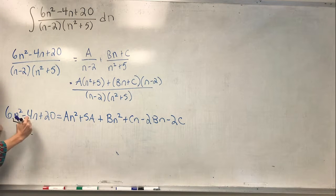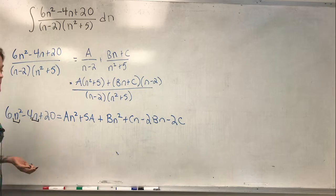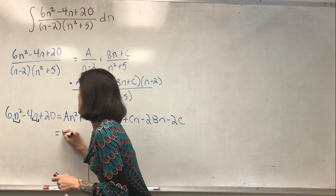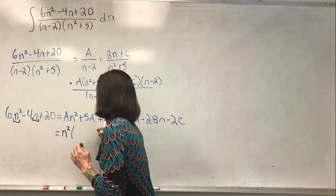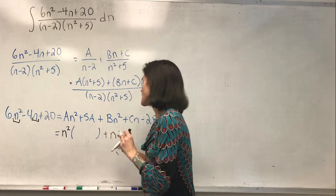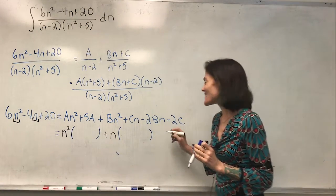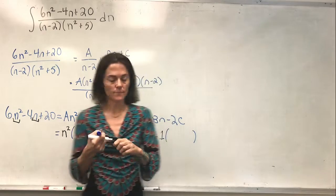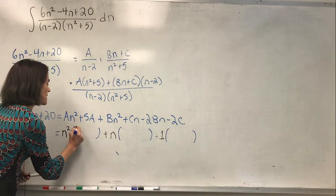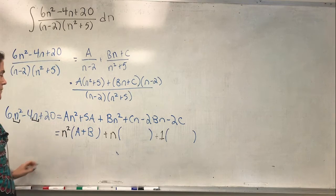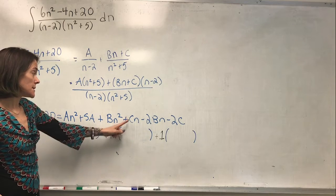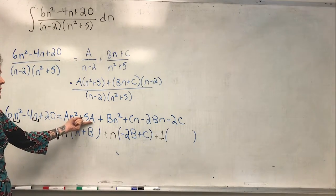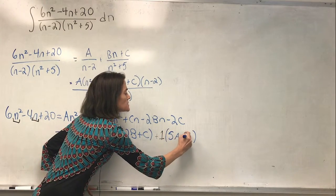So we have an n squared term, an n term, and a constant term. Grouping: with n squared we have A plus B; with n we have C minus 2B; and left over with the constant we have 5A minus 2C.